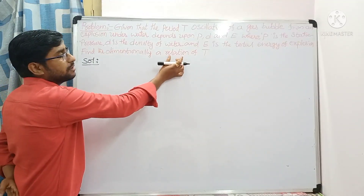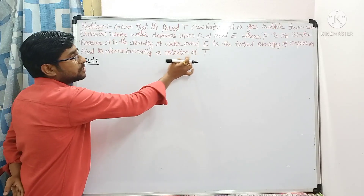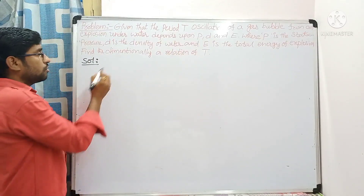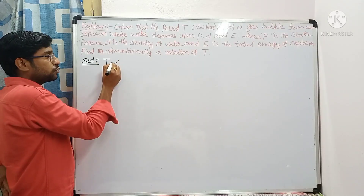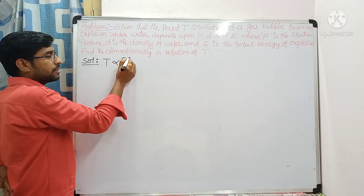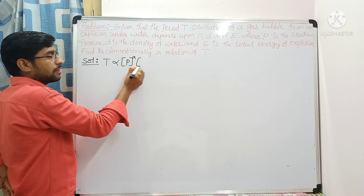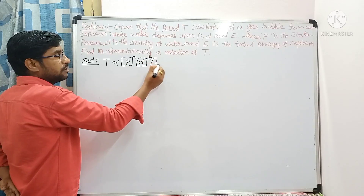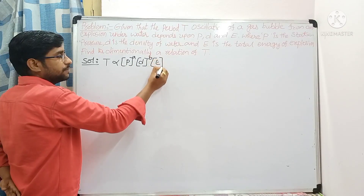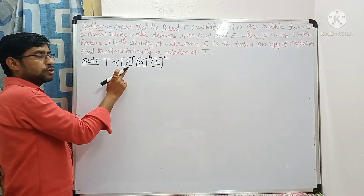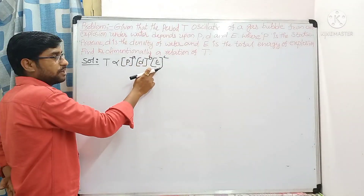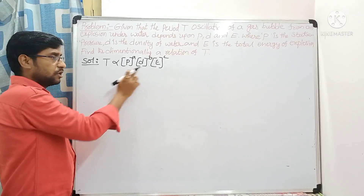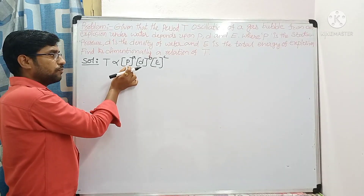We want to calculate the dimensional relation of T in terms of pressure, density, and energy. So T is proportional to pressure, density, and energy — T is proportional to p to the power a, d to the power b, e to the power c.